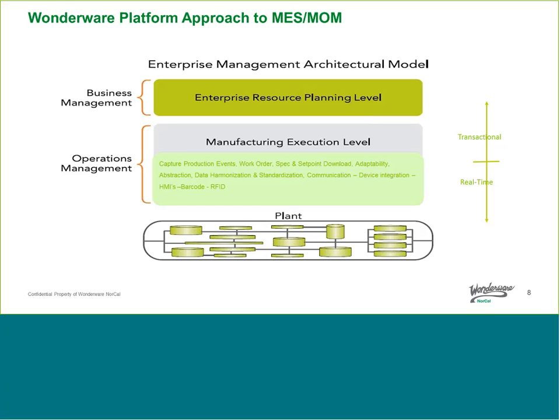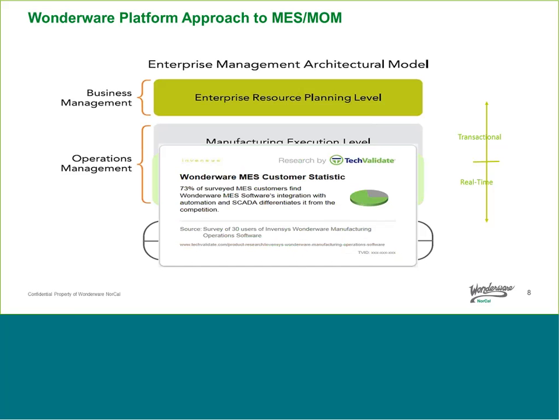Examples of information exchanged include work order status, product specifications, recipes and set points — driving standards from the business layer down to the plant floor and tracking actual versus plan. That information can come from an HMI, operator data entry, barcoding systems, or RFID systems. Wonderware MES customers find that integration of the plant floor to the business layer is a real differentiator, presenting data in a contextual way that is very useful at the business layer.